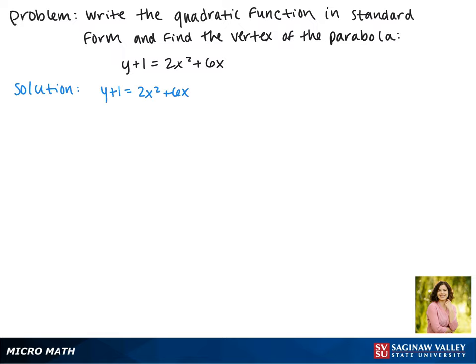We don't need to move any terms around here because the x's are on the right by themselves, which is what we need. But in order to complete the square, the coefficient of x squared must be 1, so we're going to factor out a 2. That makes it x squared plus 3x inside the parentheses.